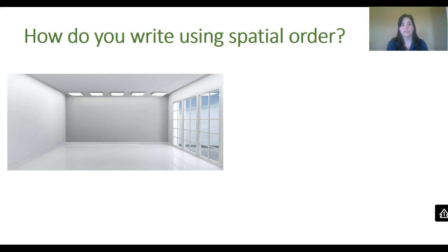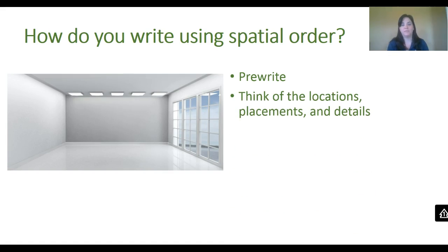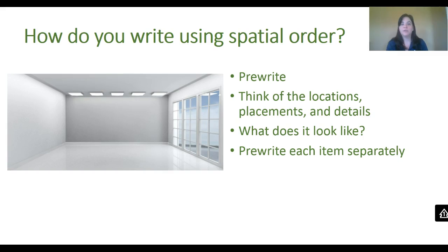So how do you write using spatial order? When you begin any writing task, you should begin by pre-writing. Pre-writing is generating ideas before you write so that you have an idea of what you want to discuss before you reach the drafting stage. If you know you're going to be using spatial order, think about that as you're pre-writing. Think of the locations, placements, and details of whatever it is you are describing. Keep asking yourself, what does it look like? That will help you come up with lots of ideas. It's also a good idea to pre-write each item or place or detail separately so that you have a lot to go on when you begin drafting.